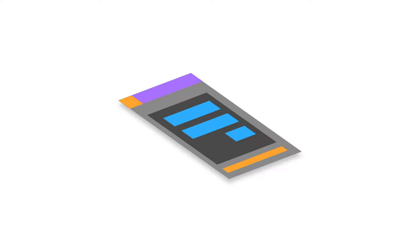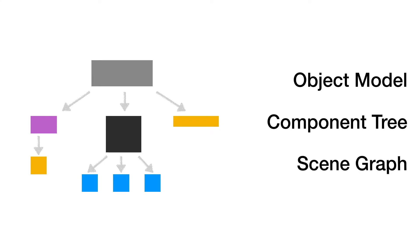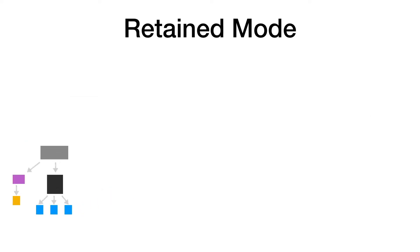Let's look at Retained mode first. The UI you see on the screen is always a 2D bitmap, but internally these UIs are composed of a set of layers that have been flattened together. In a Retained mode approach, you make this more explicit by creating a hierarchy of components. Internally, in memory, you represent this hierarchy with an object model, also referred to as a component tree or a scene graph in the case of 3D UIs. The fact that we have an object model is also reflected in the API — it is very common to see an object-oriented API for Retained mode graphics.